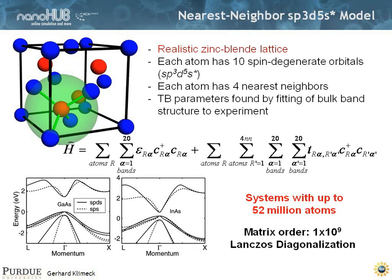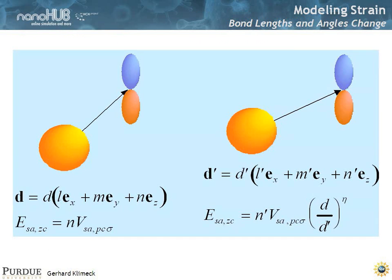For a 52 million atom system, that's a matrix of the order of 10^9 by 10^9 — a billion by a billion. Don't try that with paper and pencil. The interactions between the neighbors are scaled by angles, represented using directional cosines and as a function of distance, where we modulate the distance for each orbital as a parameter.